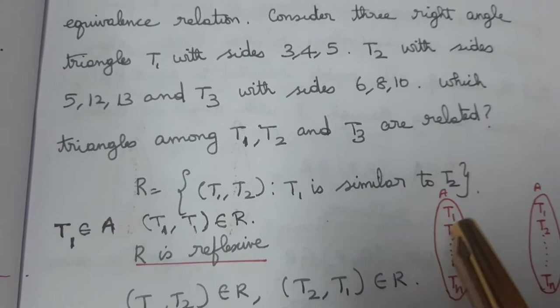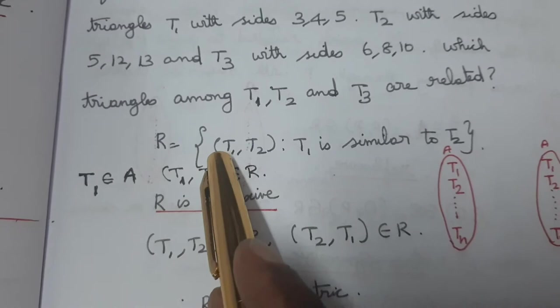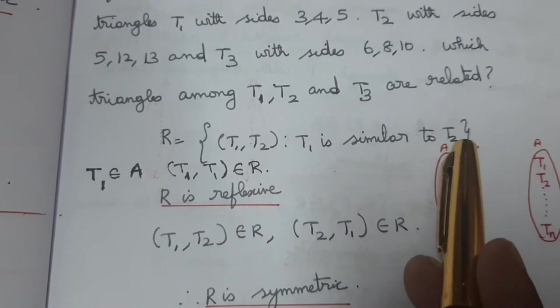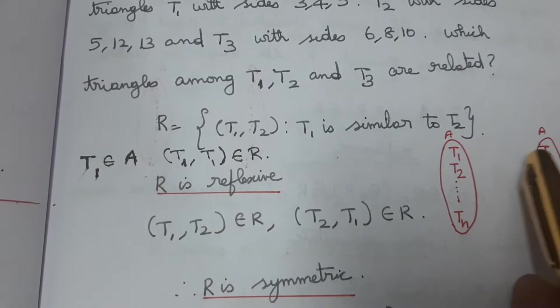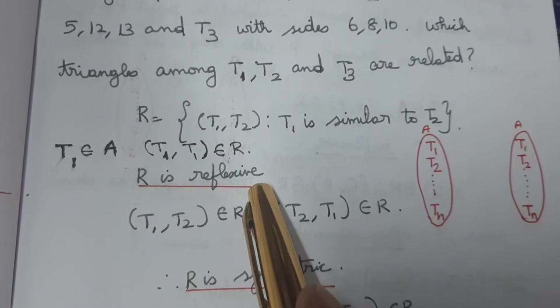So we have set of triangles: T1, T2, T3, T4, ..., TN. Our relation: (T1, T2) belongs to R if T1 is similar to T2. Since every triangle is similar to itself, T1 is similar to T1, so (T1, T1) belongs to R. Therefore R is reflexive.